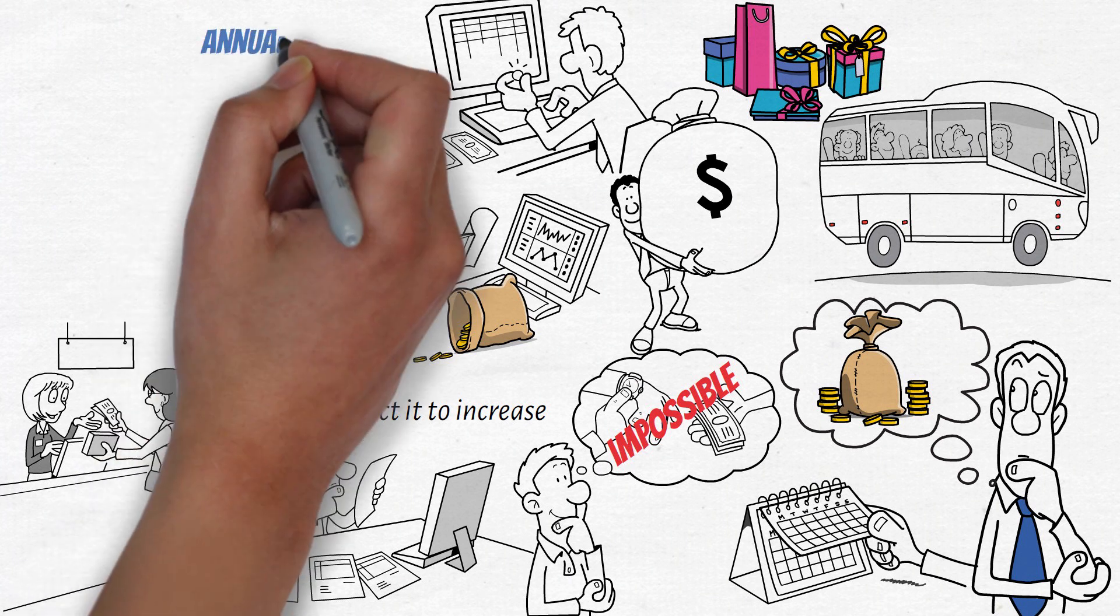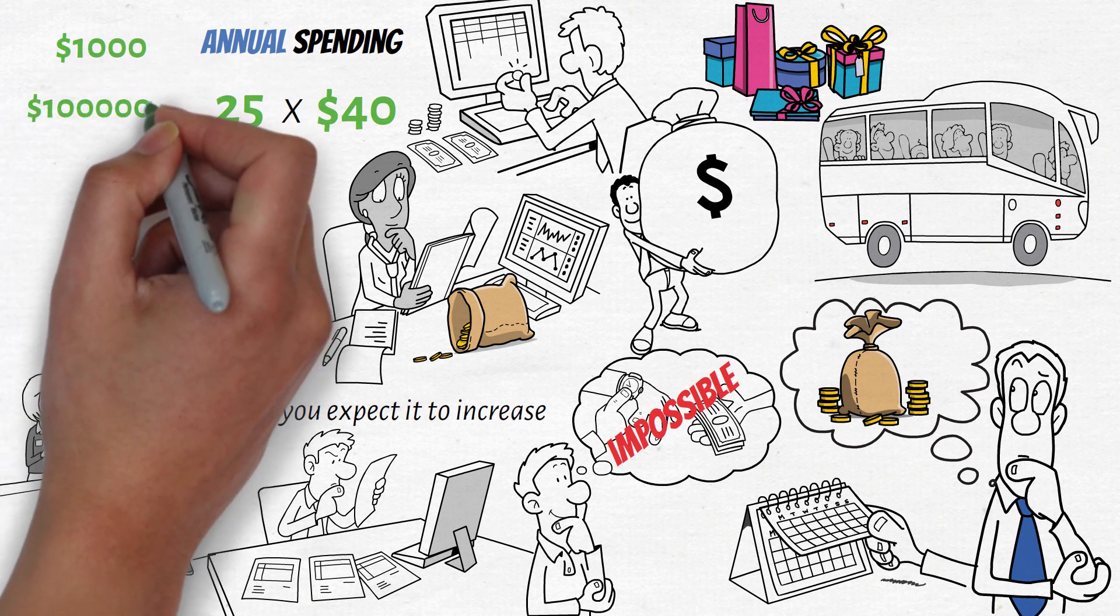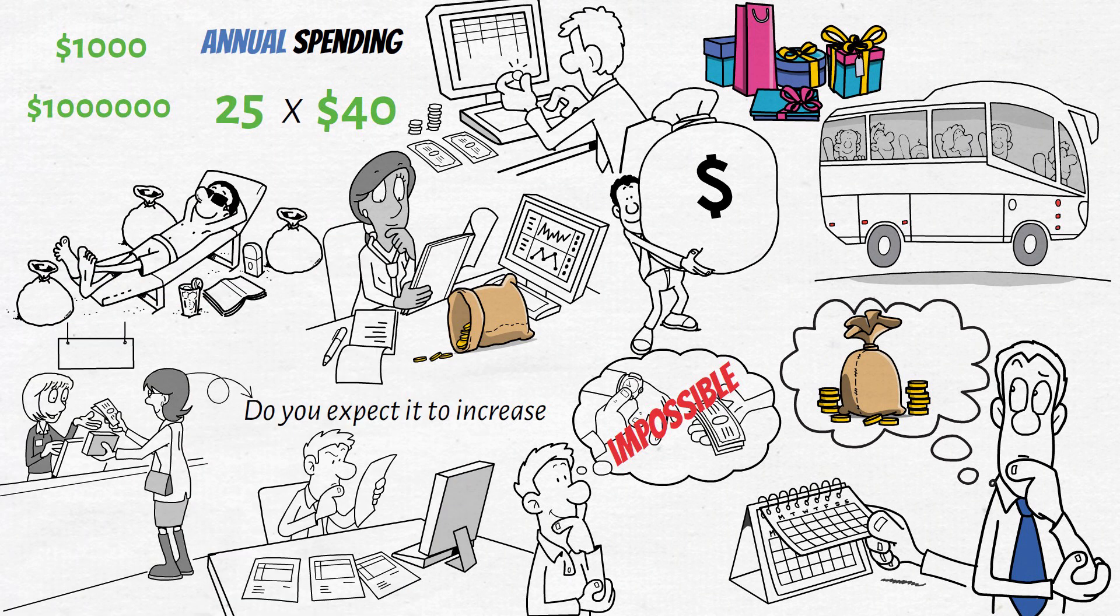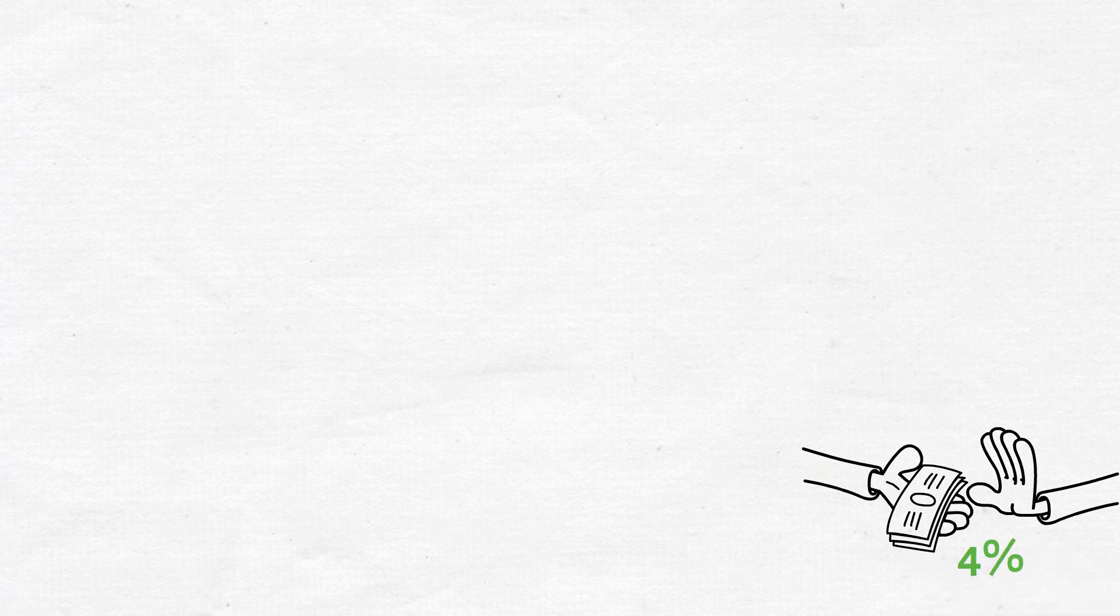Once you know your annual spending, multiply it by 25. If it's $40,000, that means you'd need about a million dollars to provide adequate income in retirement to last forever, not including taxes. This is based on a 4% withdrawal rate, which is deemed sustainable.